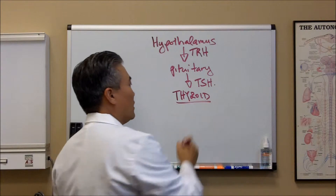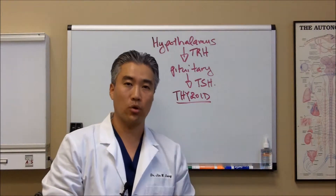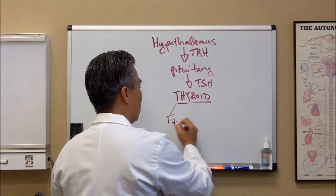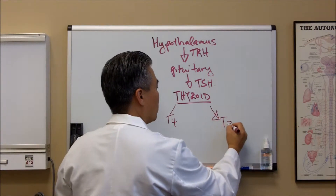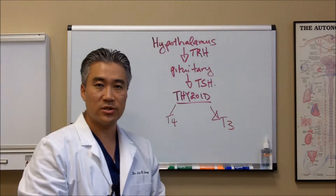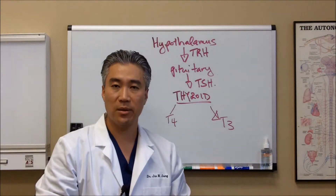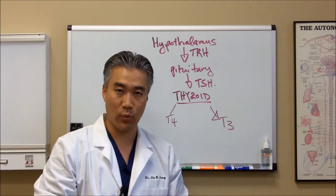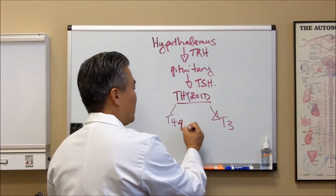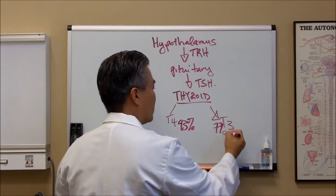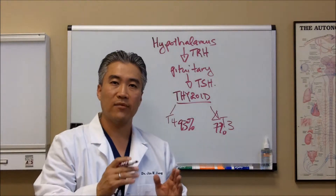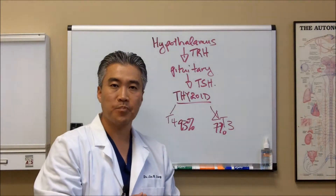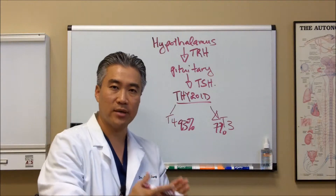Your thyroid releases two basic hormones called T4 and T3. T4 is considered inactive and has minimal physiological impact, while T3 has a bigger physiological impact because it's the active form. The thyroid produces 93% T4 and 7% T3, so in order to have normal physiological function, you need to convert the inactive T4 into T3.